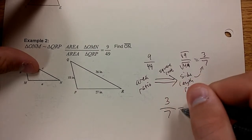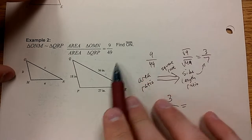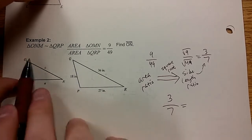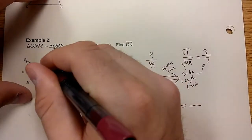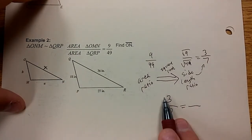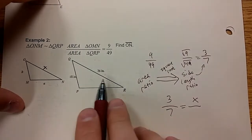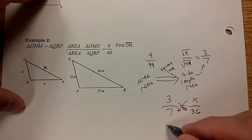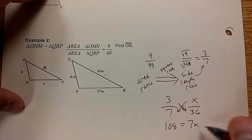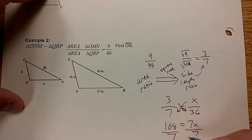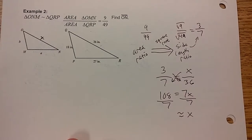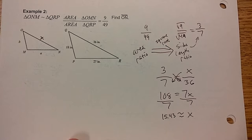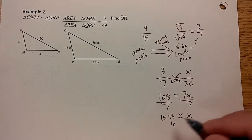Now we can use this in our proportion to find a side length. If you're asked to find ON, identify where that's at. ON is the first two letters of the statement. QR, first two letters of this statement here. QR and ON correspond. We'll call those X and 36. X, smaller triangle, smaller number on top. Goes on top with a smaller number. 36, bigger triangle, bigger number on the bottom. That's where it goes. On the bottom with 7. Cross multiply. 3 times 36 is going to be 108. 7 times X is 7X. Divide both sides by 7. 108 divided by 7 will be approximately 15.43. And the units are inches, not inches squared because this is a side length and not an area.